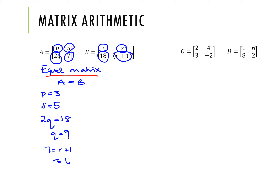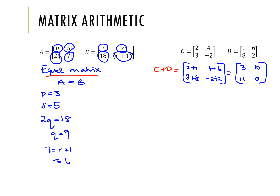For addition and subtraction or scalar multiplication: if we do matrix C plus matrix D, we add the elements in the same positions. So row one column one is two plus one, row one column two is four plus six, then three plus eight and negative two plus two on the bottom row. That gives us C plus D equaling three, ten, eleven, and zero. You can do these calculations on your calculator, but sometimes it's quicker to do it by hand for simple addition or subtraction.